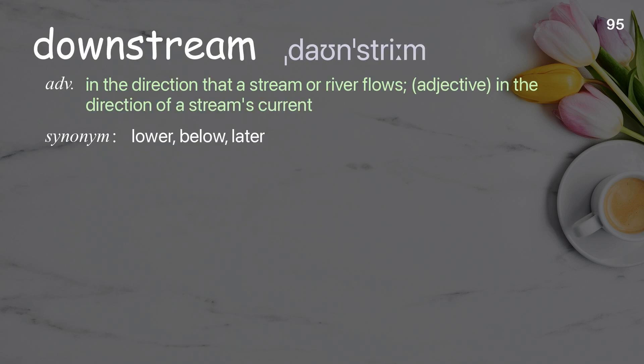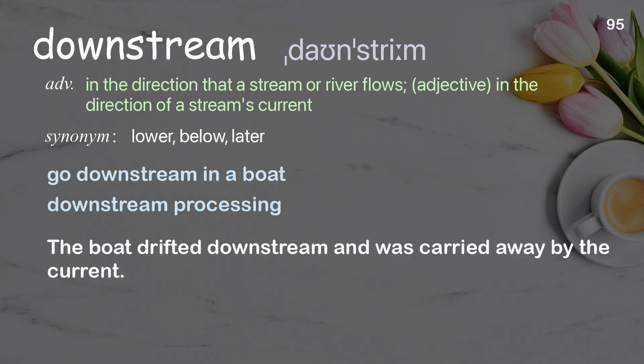Downstream: in the direction that a stream or river flows. Examples: go downstream in a boat, downstream processing. The boat drifted downstream and was carried away by the current.